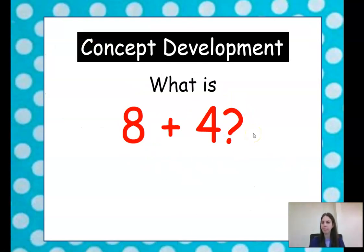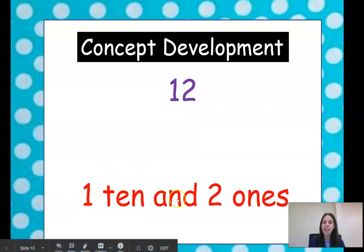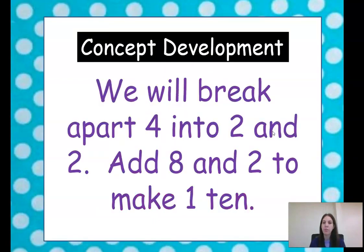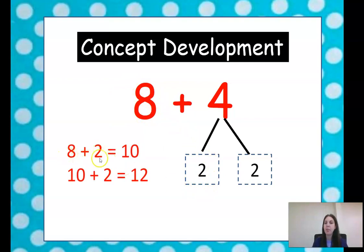What is 8 plus 4? It is 12. Now 12 is 1 ten and 2 ones. We will break apart 4 into 2 and 2. Add 8 to 2 to make 1 ten. So we're going to break apart this. This is our original addition problem, 8 plus 4. We're going to break 4 apart into a 2 and a 2. 8 plus 2 equals 10. 8 plus 2 equals 10, and then we have 10 plus 2 more equals 12.